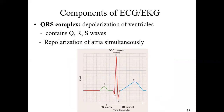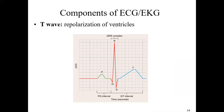The QRS complex represents ventricular depolarization — after the atria receive the action potential and become depolarized, the Purkinje fiber system carries the action potential around the ventricles so they become depolarized. In addition, the atria are being repolarized during the QRS, but that repolarization is overshadowed on the graph by the larger ventricular depolarization signal. The T wave is where the ventricles become repolarized.